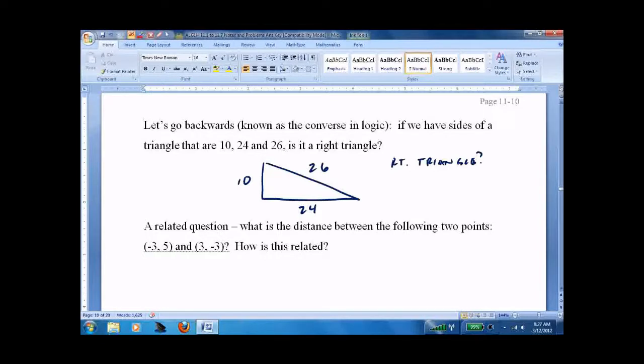If you know something's a right triangle, then a squared plus b squared equals c squared. If you know a squared plus b squared equals c squared, then you know it's a right triangle. So, 10 squared plus 24 squared. Does that equal 26 squared? The answer is yes.